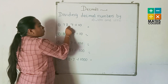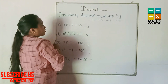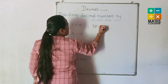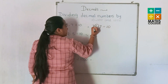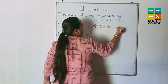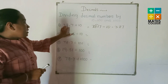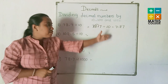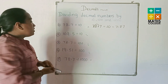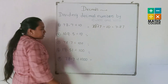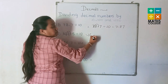10 has one zero, so the decimal point jumps one place to the left. For example, 78.7 divided by 10: the decimal moves one place left, giving 7.87. The value is decreasing — that's division. Second example: the decimal point moves one place to the left, giving 16.95.